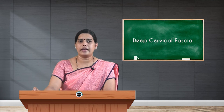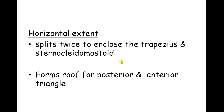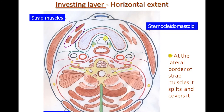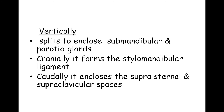Regarding the horizontal extent, the investing layer splits and encloses the two major muscles — sternocleidomastoid and trapezius — and forms the roof for both the posterior and anterior triangles of the neck. It also covers the strap muscles (infrahyoid muscles): sternohyoid, sternothyroid, thyrohyoid, and omohyoid.